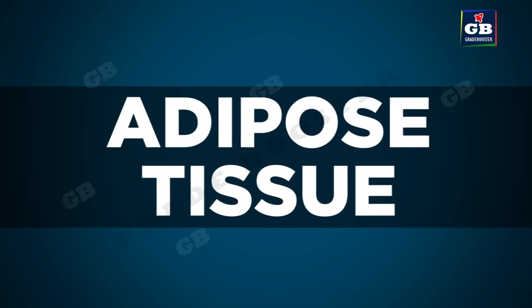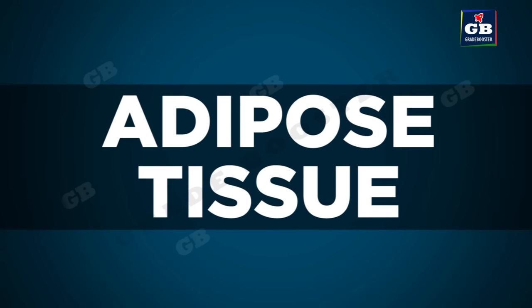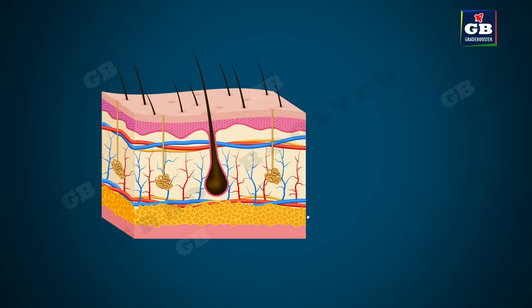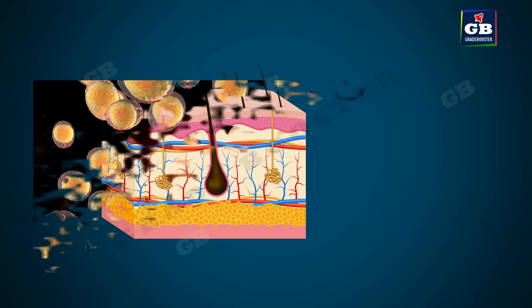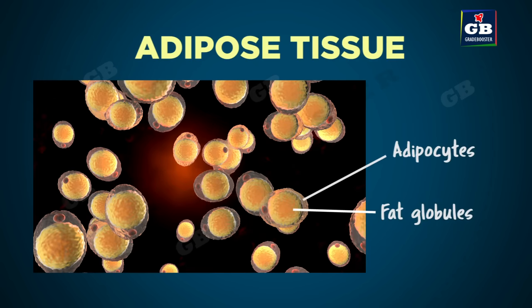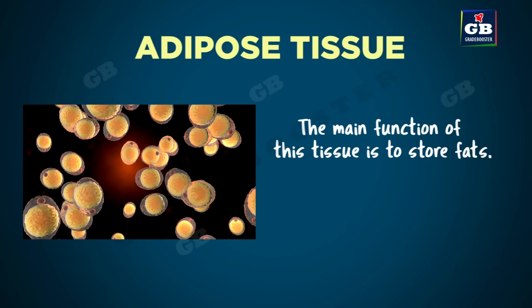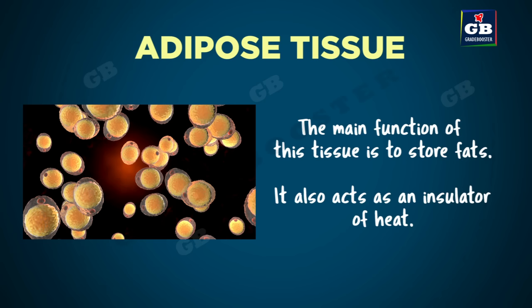Now let us see another type of connective tissue — adipose tissue. Adipose tissue is found below the skin and between internal organs. It contains cells called adipocytes, which are filled with fat globules. The main function of this tissue is to store fats. It also acts as an insulator of heat.